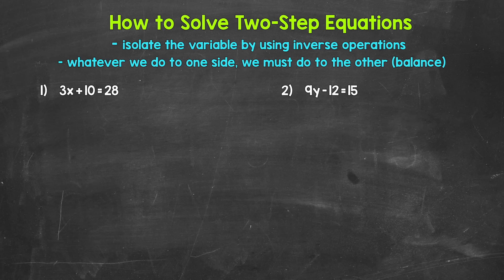Let's jump into our examples and see what this looks like. Starting with number one, where we have 3x plus 10 equals 28. So we need to solve this equation — we need to figure out what x equals. So three times what plus 10 equals 28.